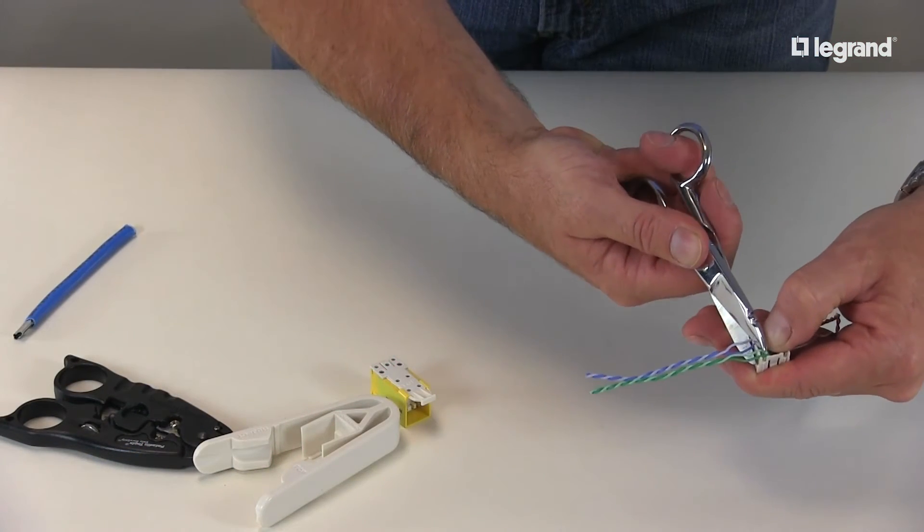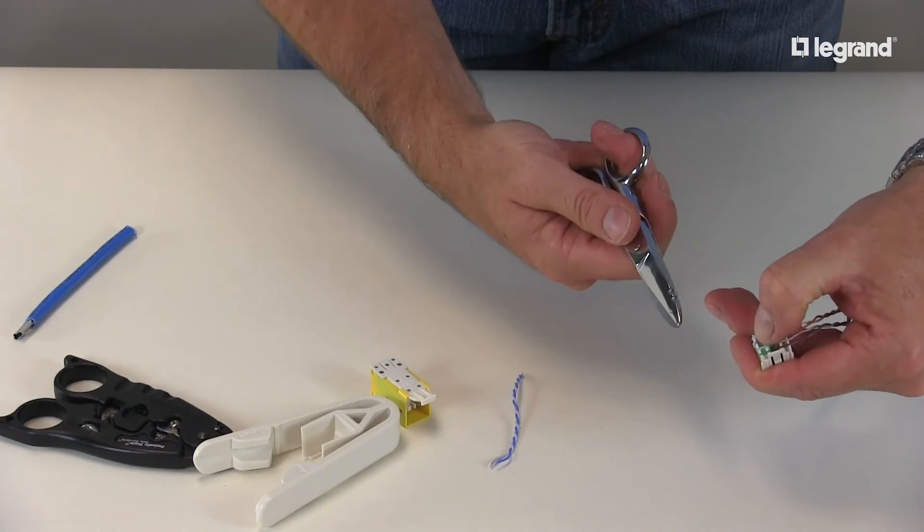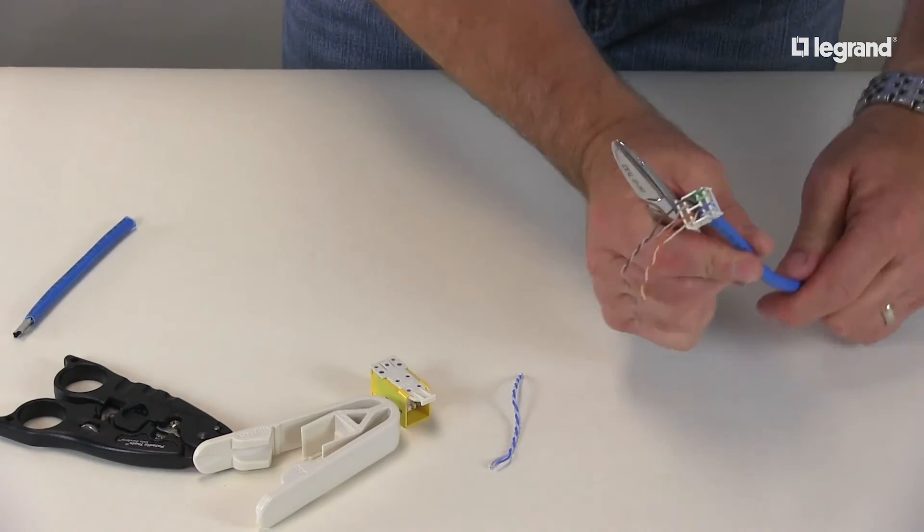Now your wires should be set in the appropriate slots. Trim the excess wire as close to flush with the lacing cap as possible.